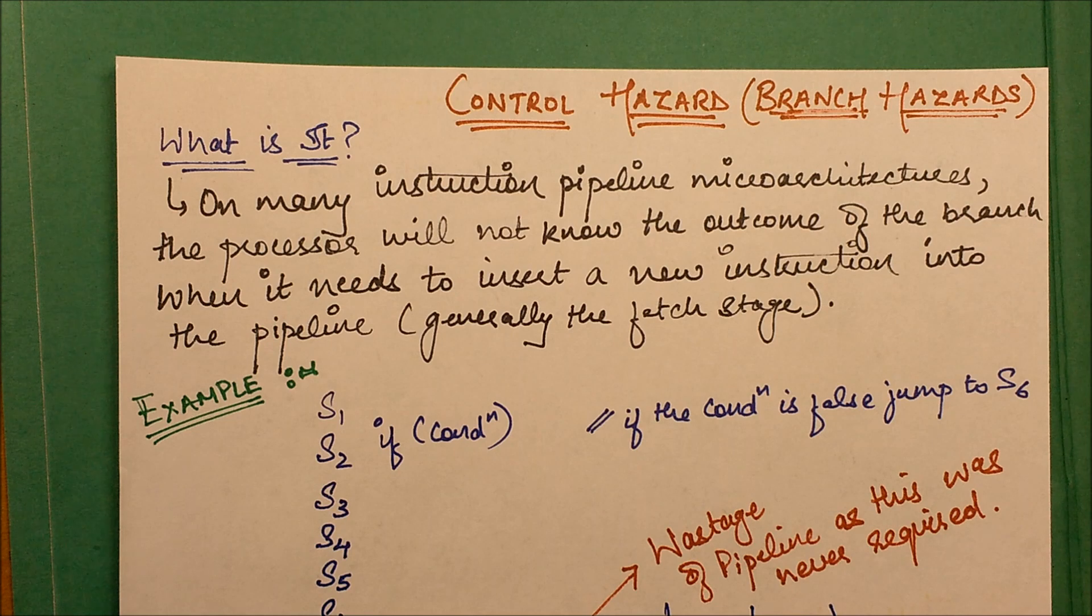Hello friends, in this session we are going to discuss another type of hazard which is control hazard. This is also known as branch hazard because it is basically caused by your branch instructions.